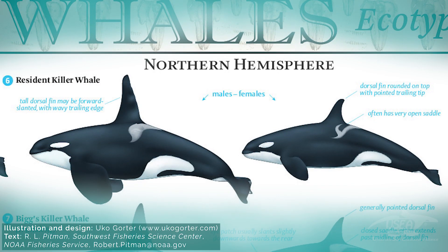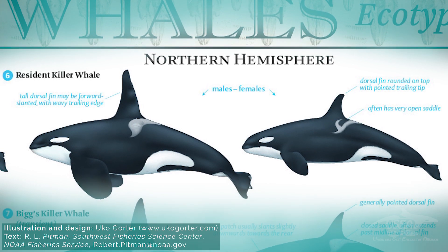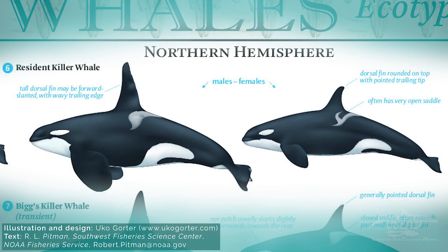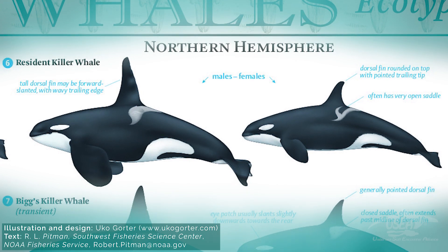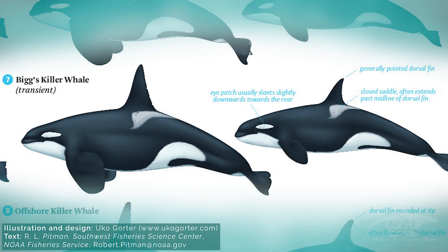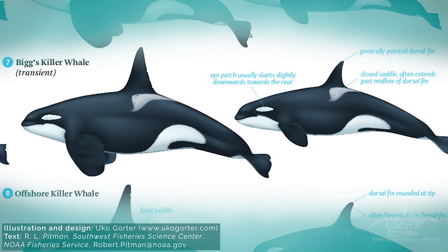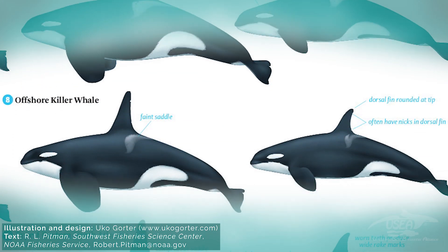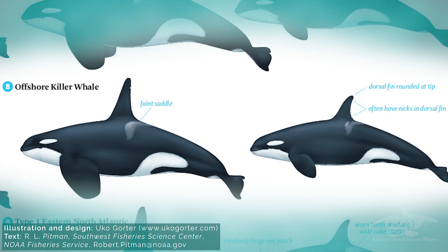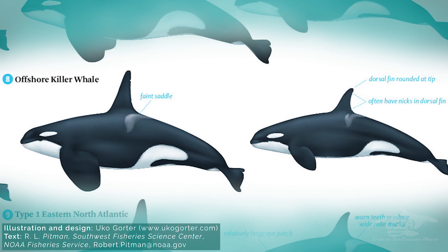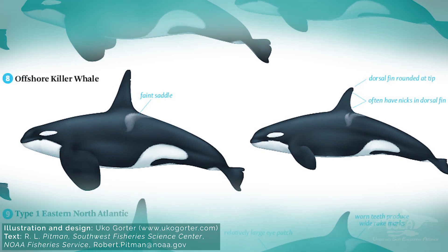Let's go to British Columbia, where we have three ecotypes of Orcas. First of all, there are the residents, split into two populations — the northern and the southern residents. The second ecotype are the transients, also called the big skill whales, and they eat marine mammals. And there is a third ecotype called offshore — they live out in the open sea. We know little about them, except that they eat sharks. We don't know if they eat only sharks, but we have observations of offshore Orcas eating sharks.